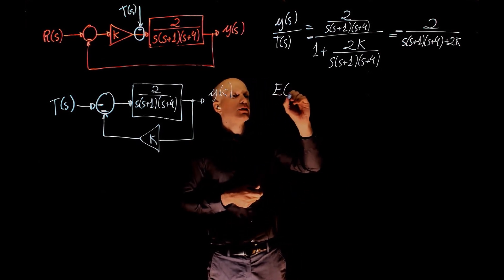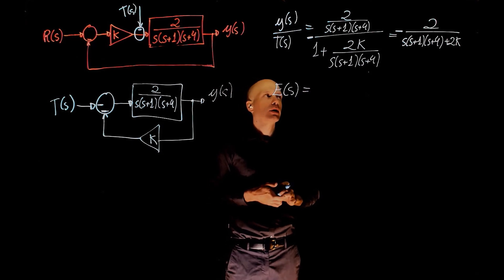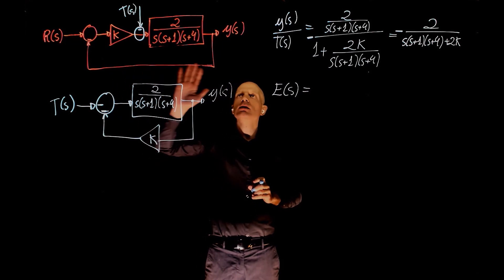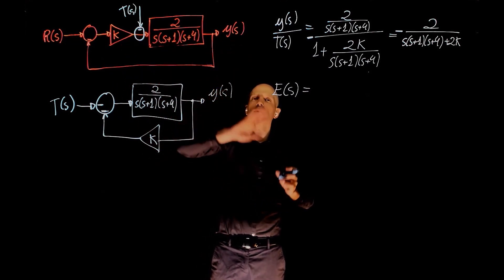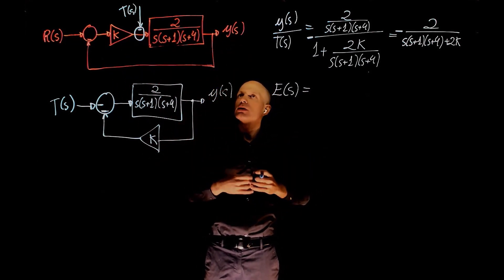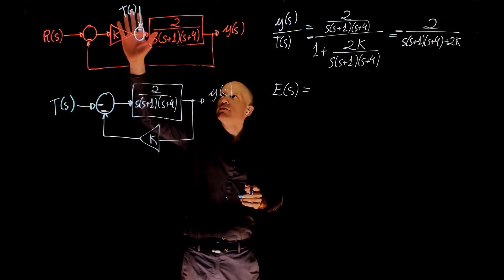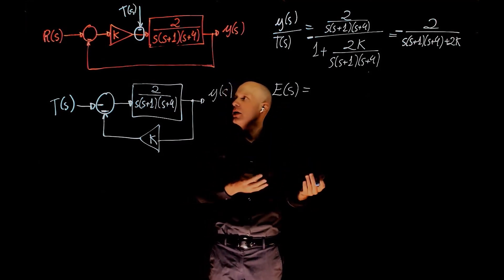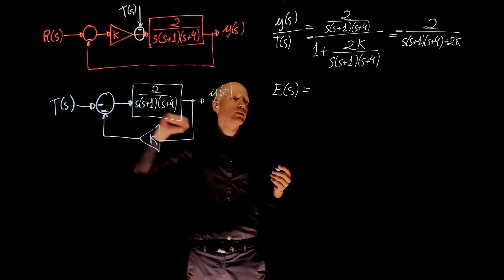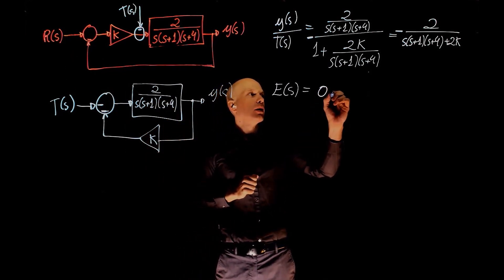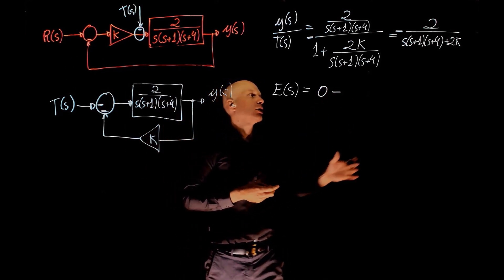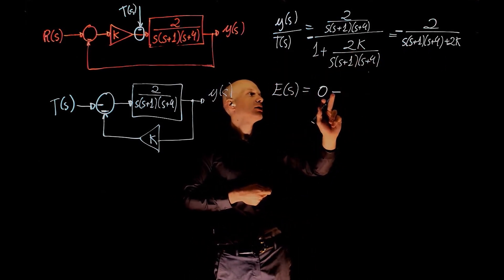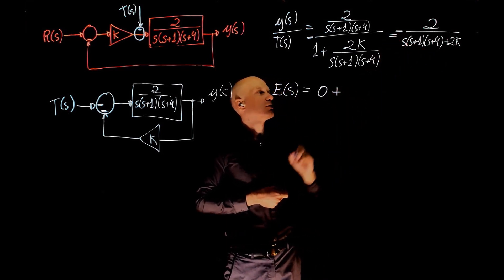The error is anything that deviates from our desired output. Our desired output in this case is 0. We set R to 0. Now we are analyzing the influence of the disturbance in the output. We want this to be minimized. We want the system to go to 0, regardless of a disturbance being applied here. So the error is defined as the desired output. That is R, in this case 0, minus the current output. The current output is this function here, times the input T(s). So minus this, because of that negative sign, this becomes positive.